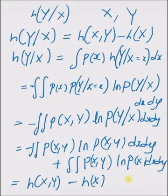Thus, the conditional entropy of Y given X is equal to the difference between entropy of p of x comma y and entropy of x.